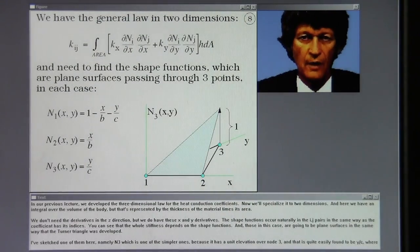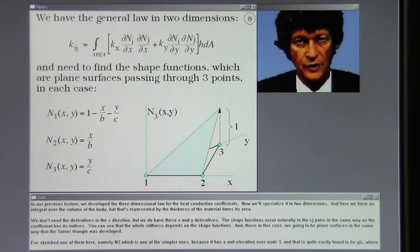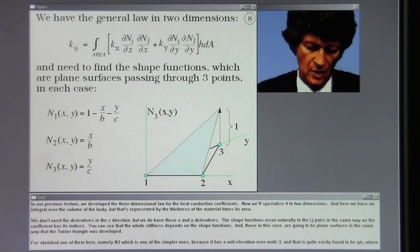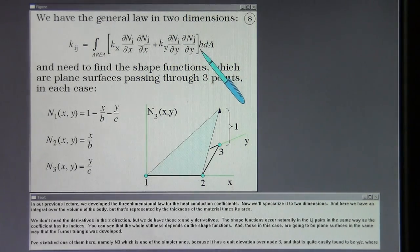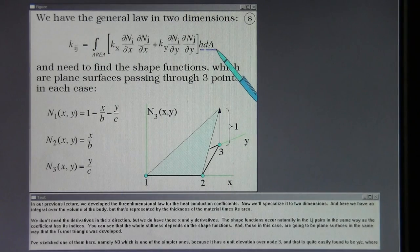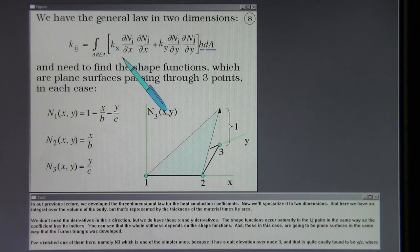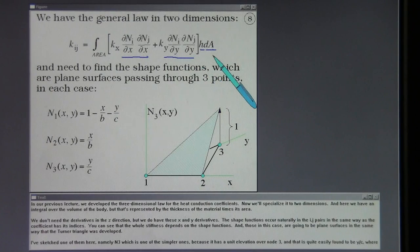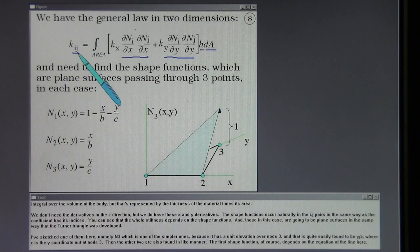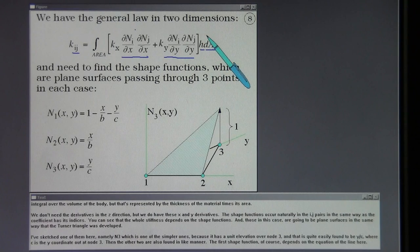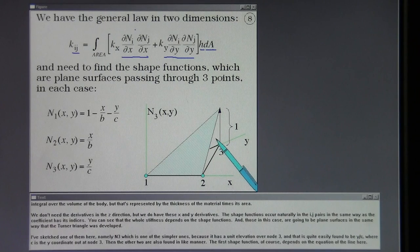In our previous lecture, we developed the three-dimensional law for the heat conduction coefficients. Now we'll specialize it to two dimensions. Here we have an integral over the volume of the body, but that's represented by the thickness of the material times its area. We don't need the derivatives in the z-direction, but we do have these x and y derivatives. The shape functions occur naturally in the i-j pairs in the same way as the coefficient has its indices. The whole stiffness depends upon the shape functions, and those in this case are going to be plain surfaces in the same way that the Turner triangle was developed.